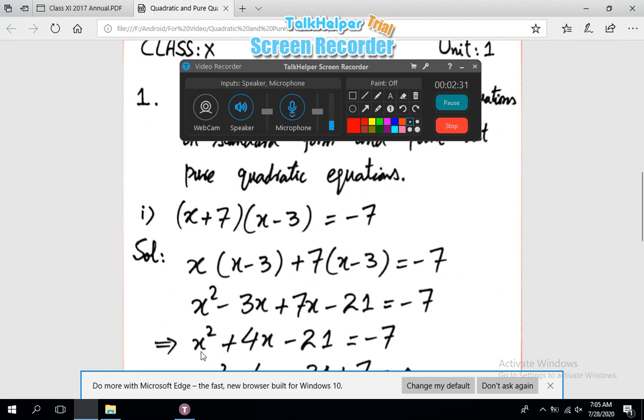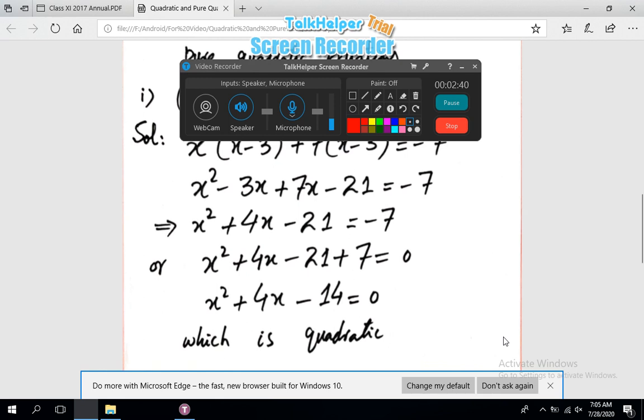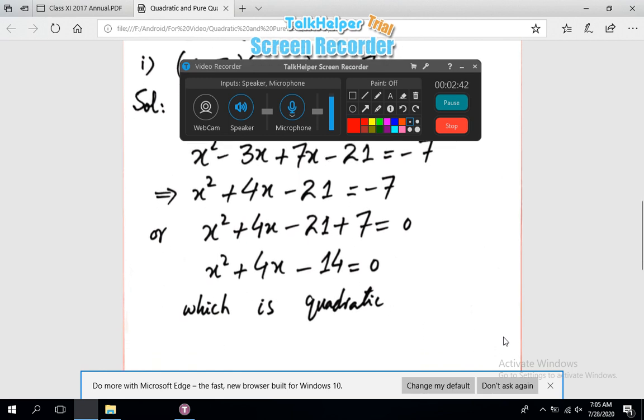Simplifying the terms on the left hand side we get x² + 4x - 21 = -7. In the next step, shifting right hand side -7 towards left, we have x² + 4x - 21 + 7 = 0. On simplification we get finally x² + 4x - 14 = 0. Viewers, it is exactly the standard form, so it is quadratic.